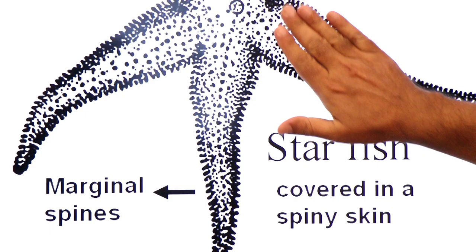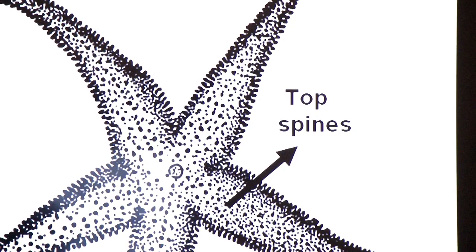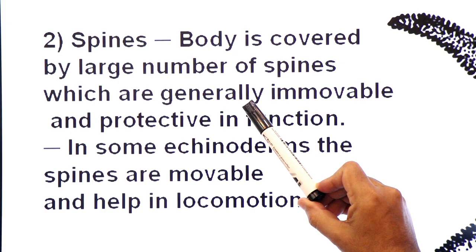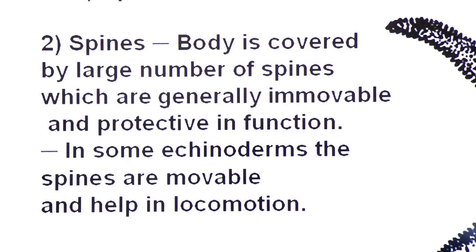Calcium carbonate made up of calcium carbonate. Now function of spines. Body is covered by large number of spines which are generally immovable and protective in function, but in some echinoderms.